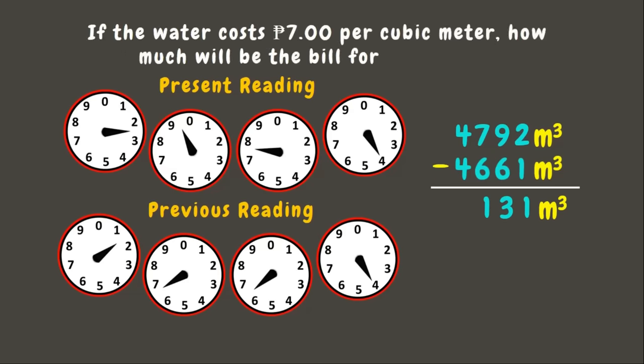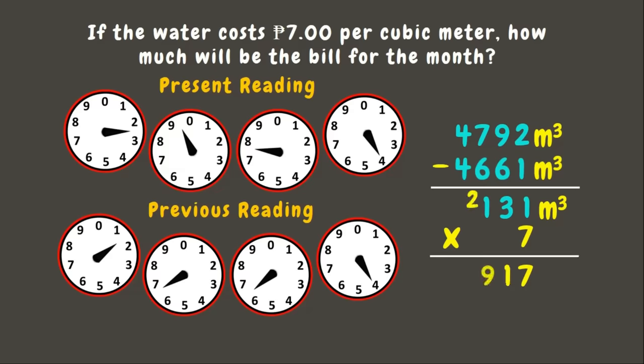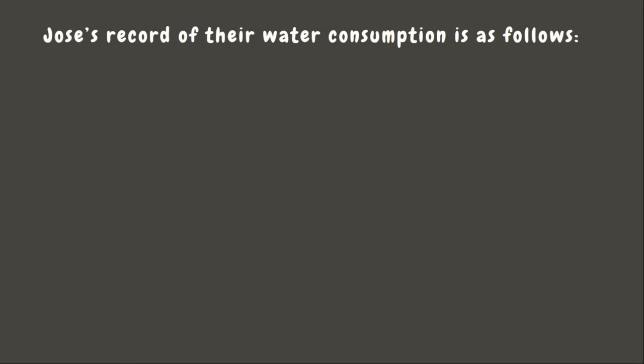To get the consumption, we subtract the previous reading from the present reading: 4,792 cubic meters minus 4,661 cubic meters equals 131 cubic meters. If water costs 7 pesos per cubic meter, we multiply 131 by 7 — the water bill for the month would be 917 pesos.